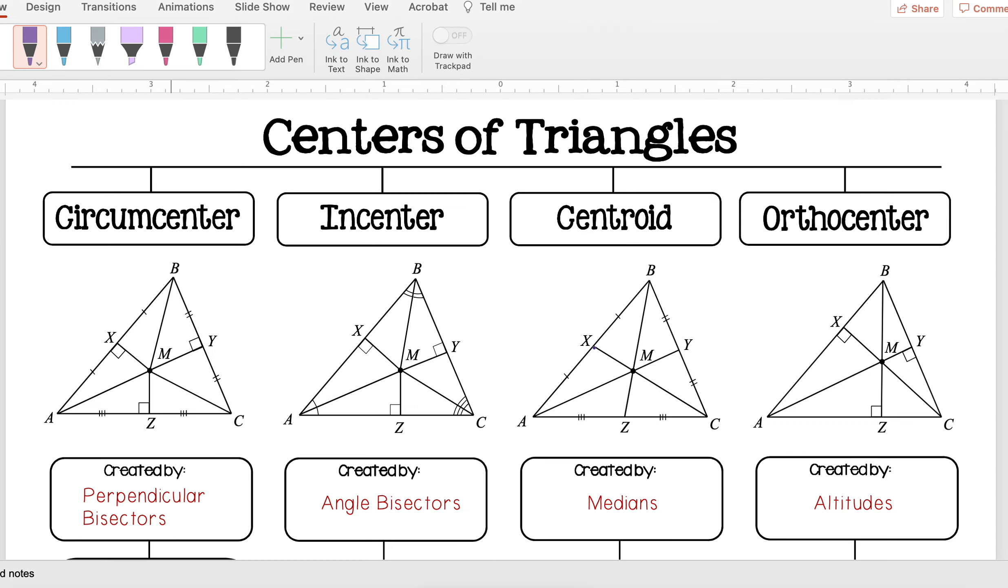And then the orthocenter, which is created by altitudes. That was going from a vertex to the opposite side at a perpendicular or at a right angle.